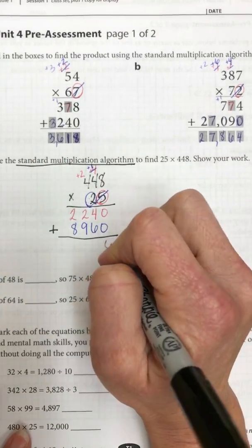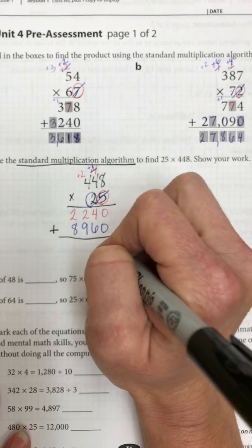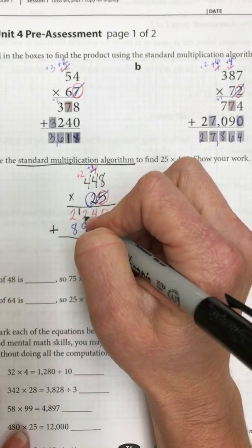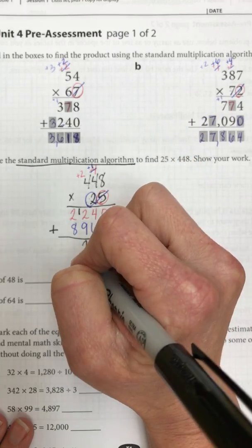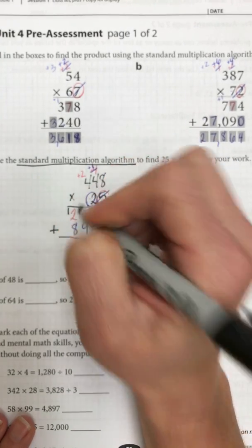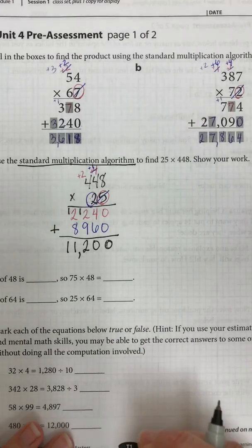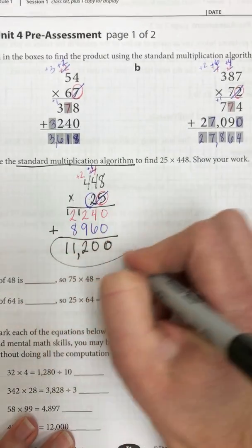Now all I have to do is add them all together. So 0 plus 0 is still 0. 4 plus 6 is 10, so I have a 0 and carry my 1. 1 plus 2 is 3 plus 9 is 12. 1 plus 2 is 3 plus 8 is 11. So I have 11,200 as my final answer.